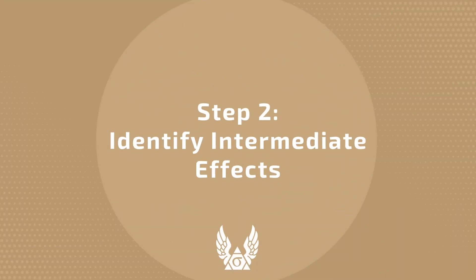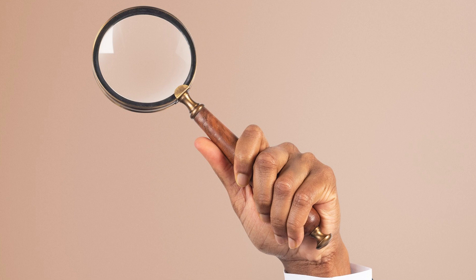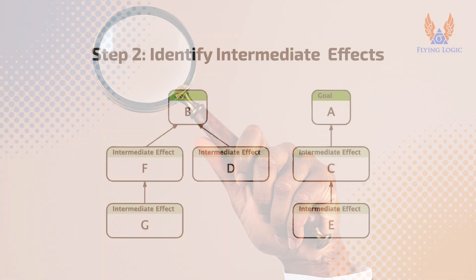Step 2: Identify Intermediate Effects. If you have already done a prerequisite tree, you have set milestone entities that you can copy directly to your transition tree document. It's important to realize, however, that while the milestones in a prerequisite tree are all necessary, they probably aren't sufficient. The prerequisite tree is used for identifying and overcoming the things you don't yet have, while the transition tree is used for identifying everything you need to do and the order in which you need to do them. You may want to create intermediate effect entities that represent states you know you will need to achieve along the way to your goal, and link them with edges as their order becomes more or less defined. Defining the exact causal sequence is the focus of the following steps.